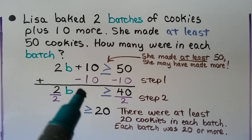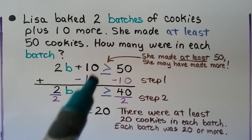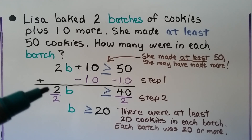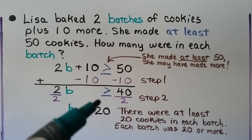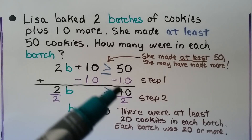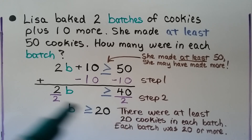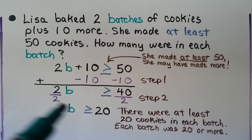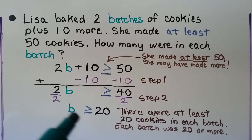Step 1: use additive inverse to get rid of the plus 10 — add a negative 10 to each side. That creates a zero pair and we're left with 2b is greater than or equal to 40. 50 minus 10 is 40. We divide both sides by the coefficient 2, because 2b is multiplication and division is the inverse. That leaves 1b is greater than or equal to 20. So we know there were at least 20 cookies in each batch — 20 or more.